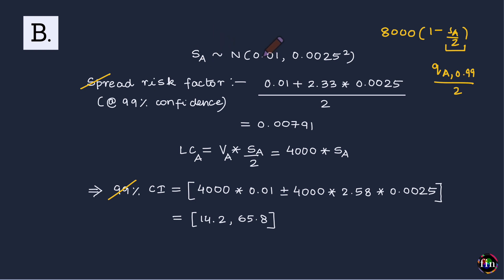Since S_A is normally distributed, the 99th percentile quantile is calculated as: mean + 2.33 × standard deviation = 0.01 + 2.33 × 0.0025. Divided by 2, this gives a spread risk factor of 0.00791. This is a number you are 99% confident will not be exceeded. For the liquidation cost of stock A, it equals the dollar value of the position (taking absolute value for the long position: $8,000) times S_A / 2.